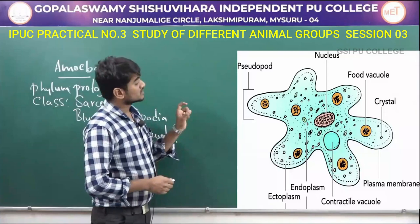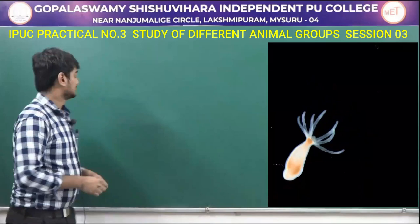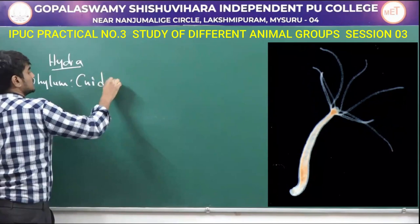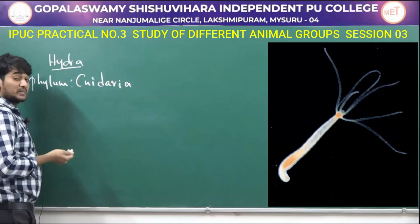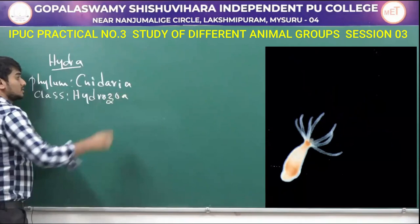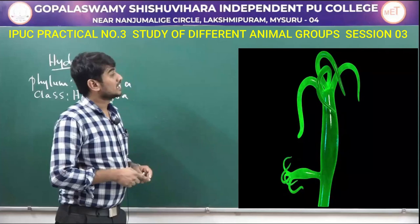The next one is Hydra. Hydra comes under the phylum Cnidaria and class Hydrozoa. These animals are invertebrates, which means they don't have a backbone or spines. In the right side we can observe the picture of Hydra. The body is elongated and cylindrical polyp with long slender tentacles encircling the hypostome.